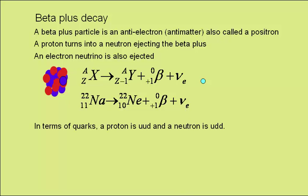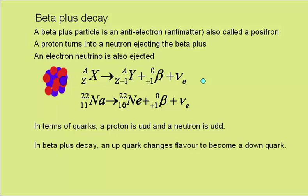In terms of quarks, a proton is two up and a down quark, and a neutron is one up and two downs. So now in beta plus decay, an up quark has changed flavour to become a down quark. This again is a weak interaction involving the weak force.